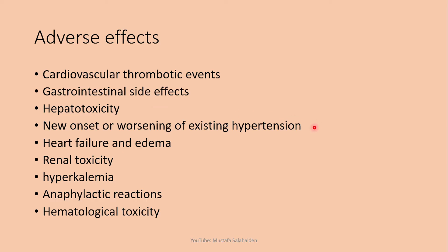Another side effect is new onset or worsening of existing hypertension. Celecoxib causes hypertension because COX-2 inhibition leads to less vessel elasticity. When used with antihypertensive drugs such as thiazide diuretics, loop diuretics, and ACE inhibitors, those drugs have impaired action due to Celecoxib's interaction with them, further contributing to hypertension.